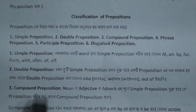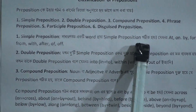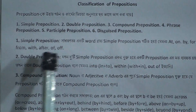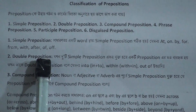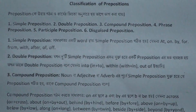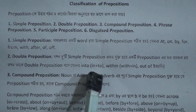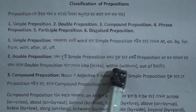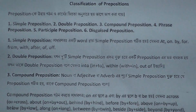There are several types: simple preposition, compound preposition, double preposition, phrase preposition, participle preposition, and disguised preposition. For double preposition, we use combinations such as into, within, without, and out of — that is, two prepositions joined together. That is how we can see that we have double prepositions.